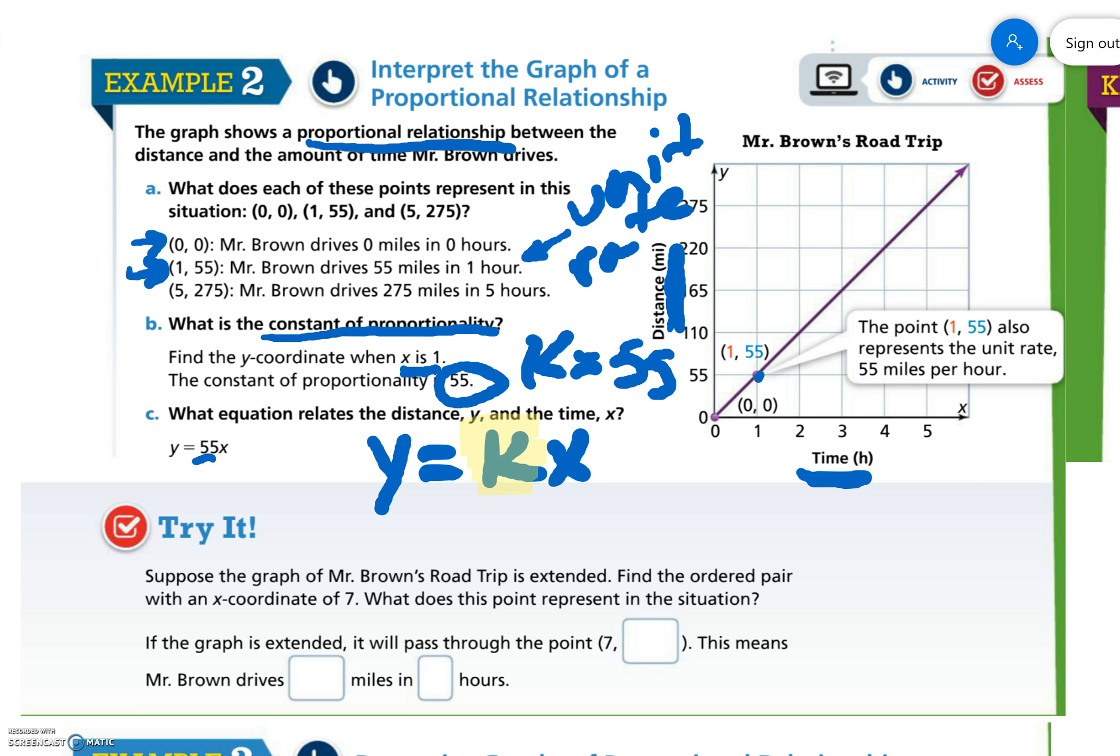Well, we already know the equation is y equals 55x. So now our x value is seven. So we're going to do y equals 55 times seven. Get out my handy dandy calculator. 55 times seven is 385.